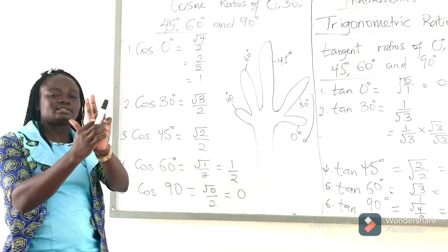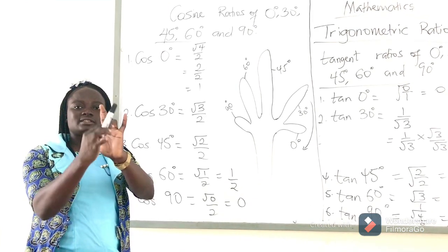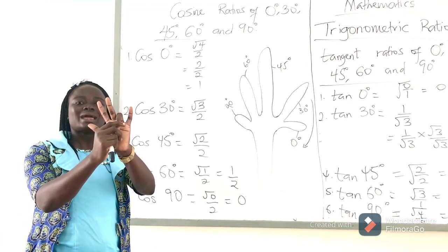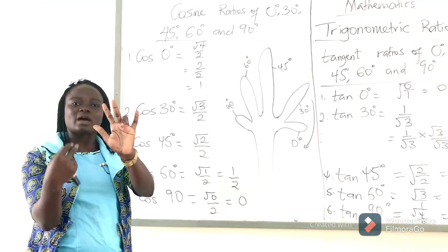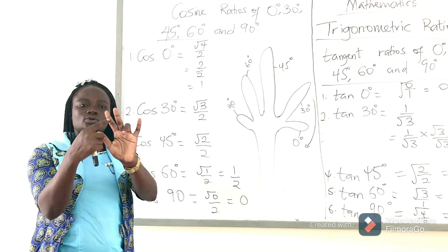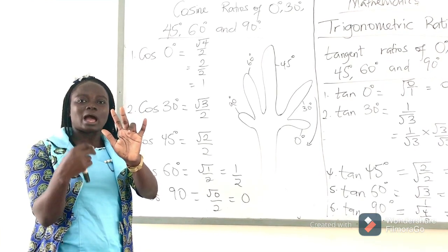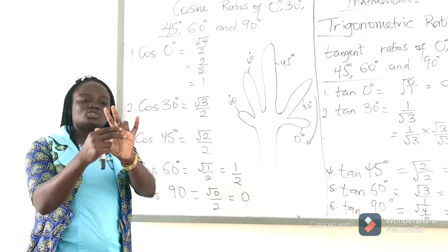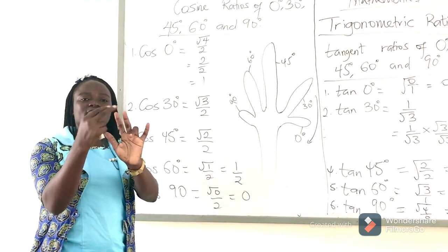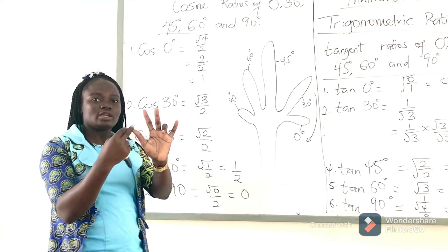The next is the ring finger, which is our 30 degrees. When you take the ring finger, we count the number of fingers above it. How many fingers do we have above it? 1, 2, 3. So that is square root of 3 over a constant denominator of 2. We can conclude that cosine 30 degrees is square root of 3 over 2.